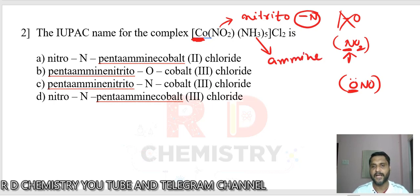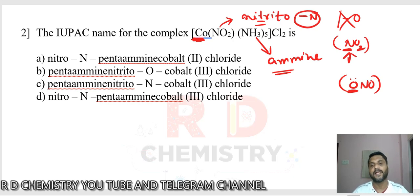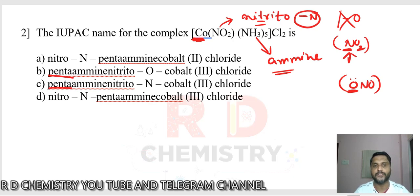You must go in alphabetical order: amine comes first, then the nitrito ligand. Outside the square bracket, the chlorides are the counter ions. How many amines? Penta-amine. Penta comes in both options B and C — penta-amine, nitrito-N, and cobalt(3) chloride.